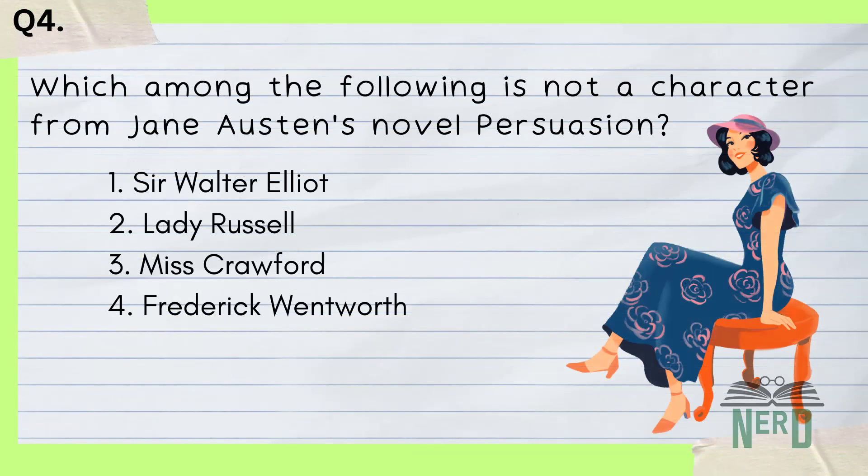Question 4. Which among the following is not a character from Jane Austen's novel Persuasion? 1) Sir Walter Elliot, 2) Lady Russell, 3) Miss Crawford, 4) Frederick Wentworth. Answer: 3, Miss Crawford.